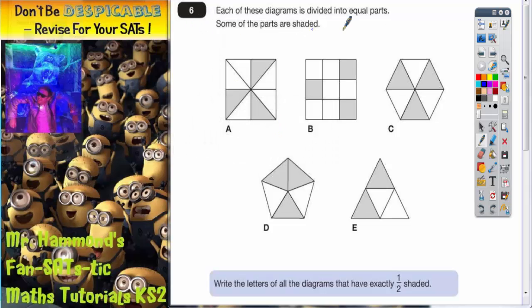Question 6. Each of these diagrams is divided into equal parts. Some of the parts are shaded. It says write the letters of all the diagrams that have exactly one half shaded. Now this question is obviously all about fractions of shaded shapes, but it's also requiring some knowledge of equivalent fractions which we will talk about in a moment.